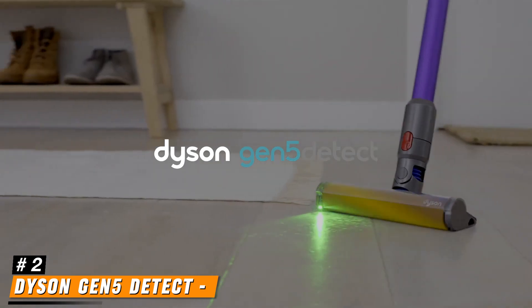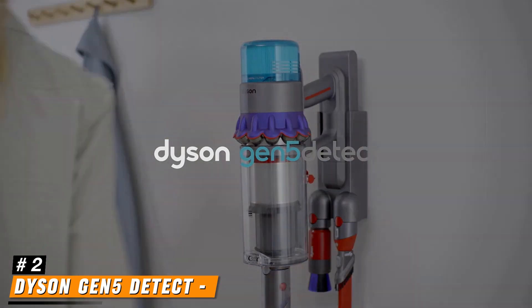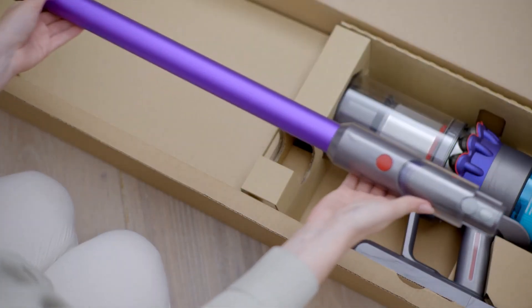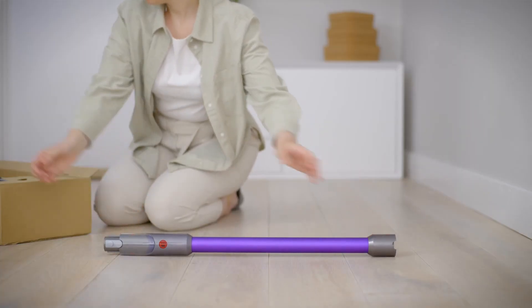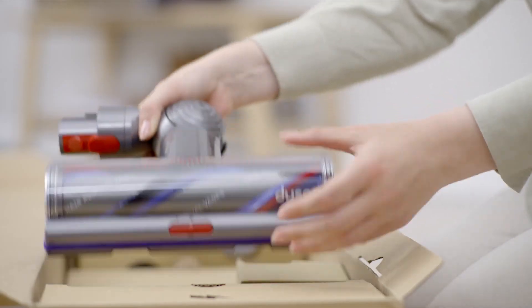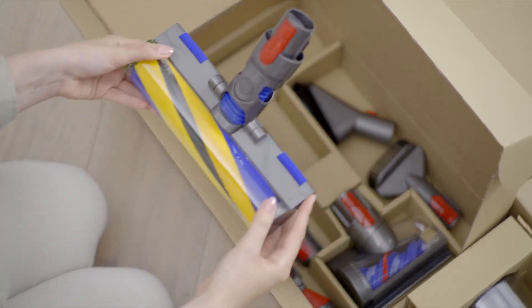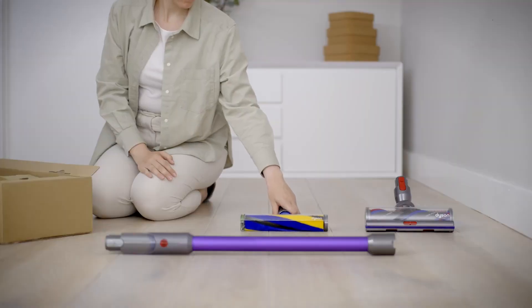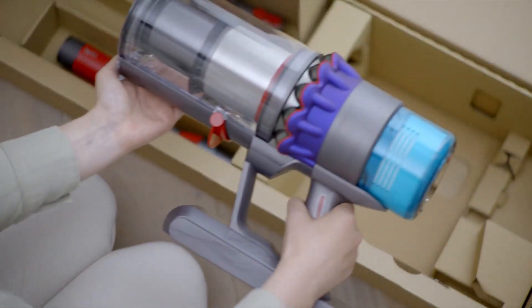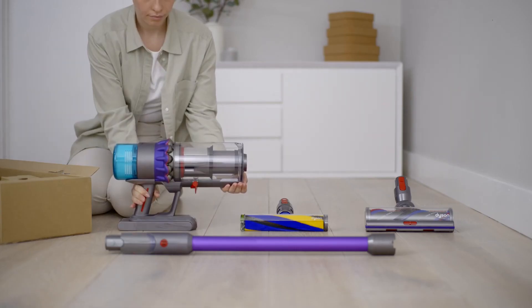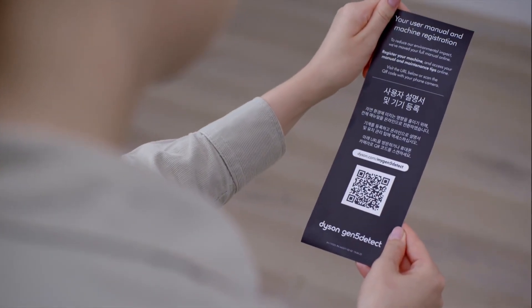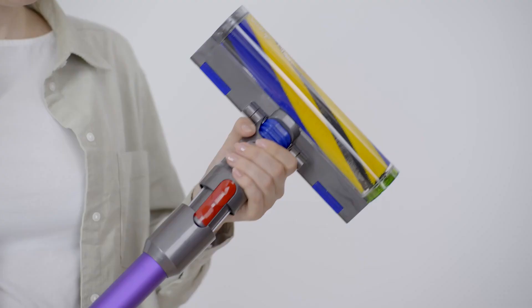Number 2. Dyson Gen 5 Detect. The Dyson Gen 5 Detect is the latest innovation in cordless vacuum technology, embodying Dyson's commitment to producing powerful and efficient cleaning solutions. This vacuum not only boasts cutting-edge features, but also reflects a sleek design that is both functional and visually appealing. One of its standout specifications is its powerful motor, which generates up to 230 air watts of suction, making it one of the most powerful cordless vacuums available on the market today.